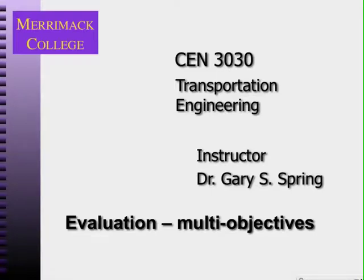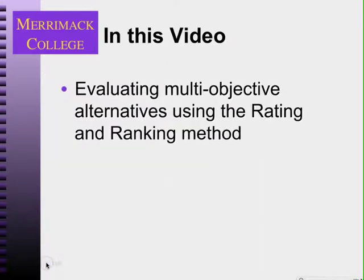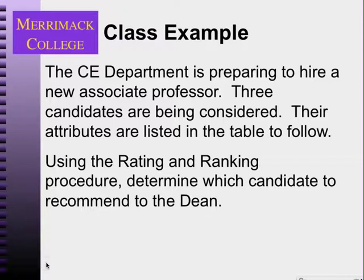In this video I'm going to explain a very simple method for evaluating alternatives that do not have all monetary objectives. We're going to provide information to decision makers investing in large projects where some important things cannot be measured readily with money. We're going to use the rating and ranking method to evaluate a simple example: our civil engineering department is preparing to hire a new professor, we have three candidates, and we need to choose the one that would best serve our department goals.